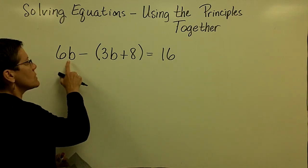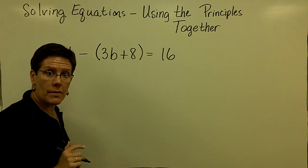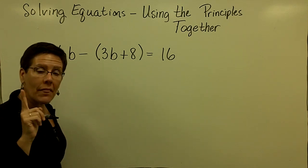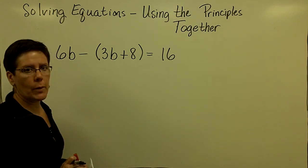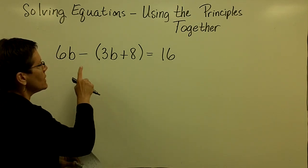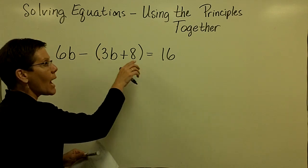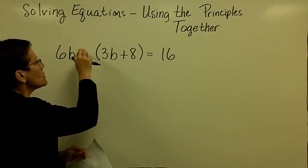This reads 6B minus all of what's in the parentheses there. You can think of it in one of two ways. You can think of it as me asking you to add the opposite. Let me just write this.